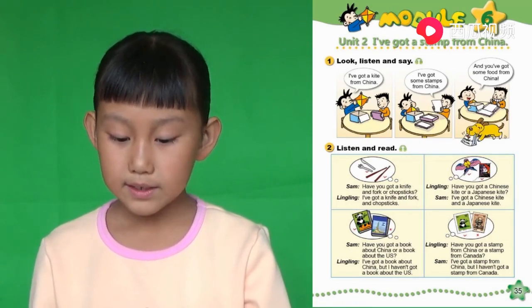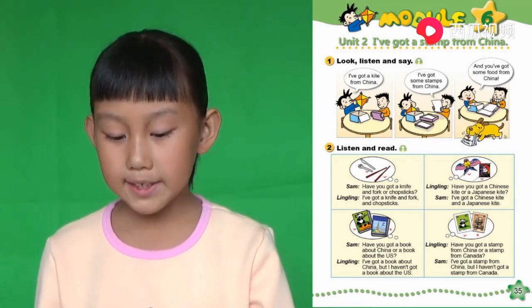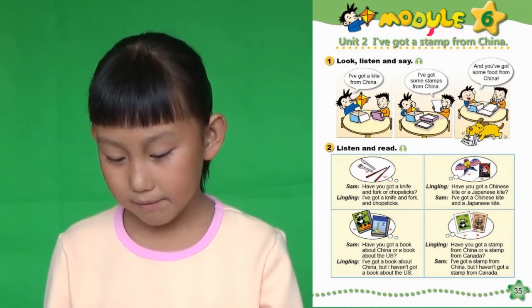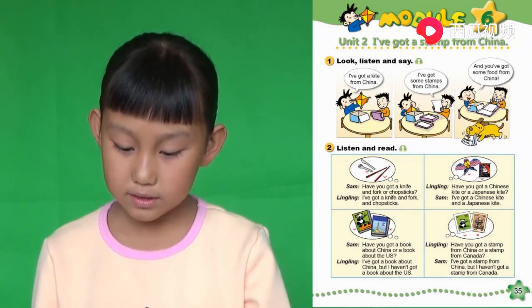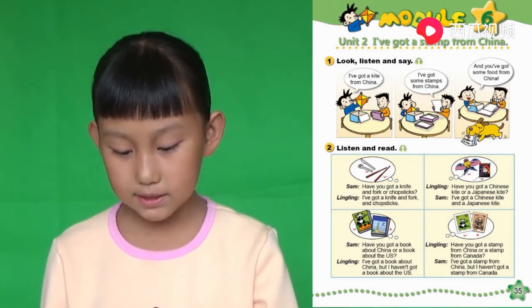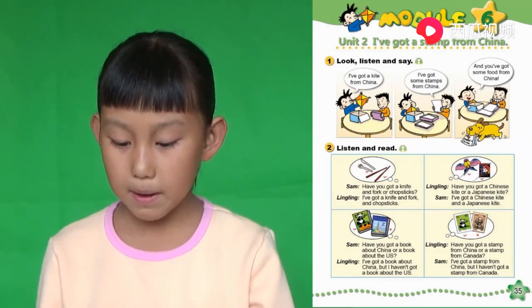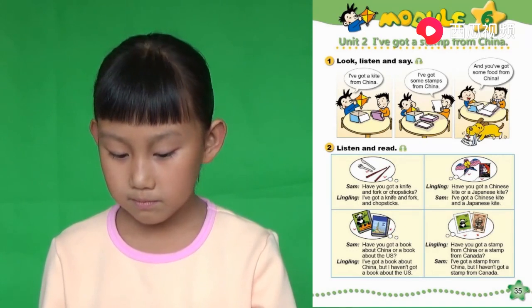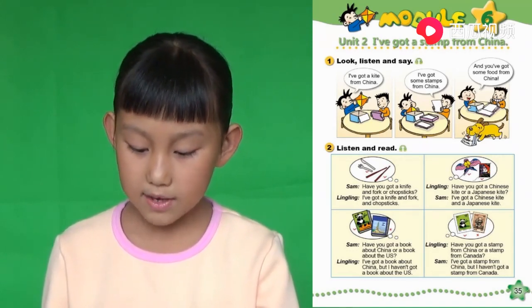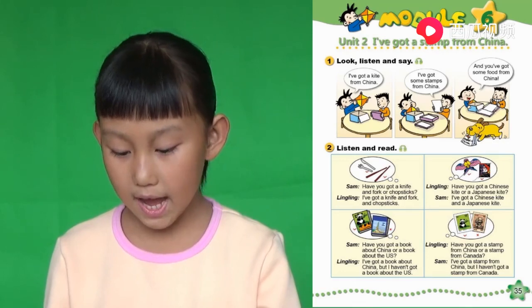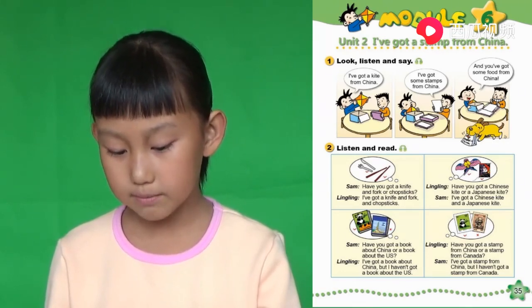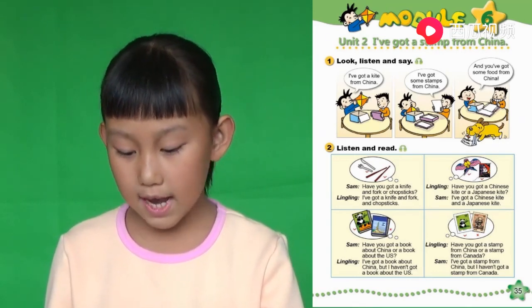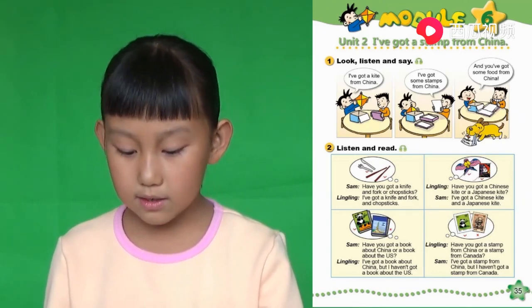2. Listen and read. Have you got a knife and fork or chopsticks? 你有一把刀、叉子或者筷子？